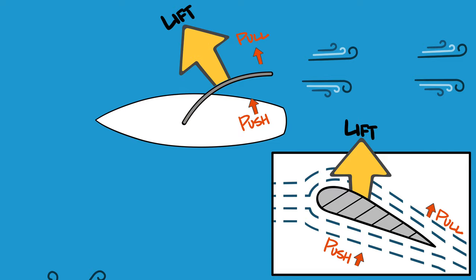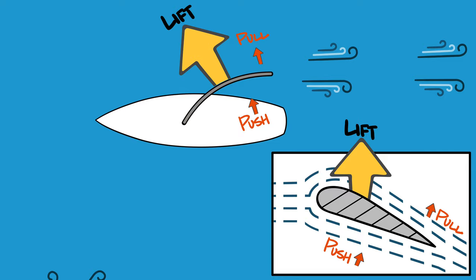However, unlike the wings of an airplane where the direction of lift is vertical, in case of sails the direction is horizontal.